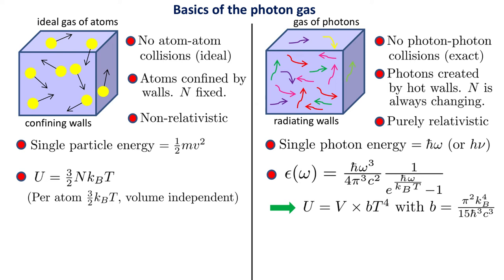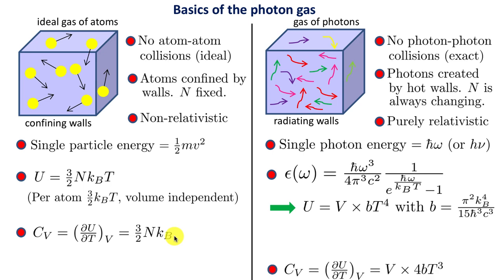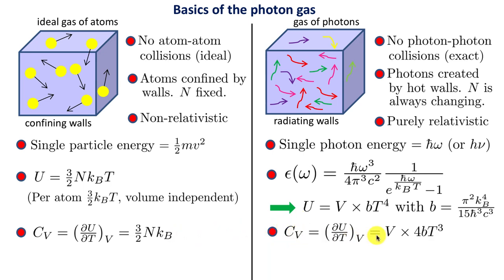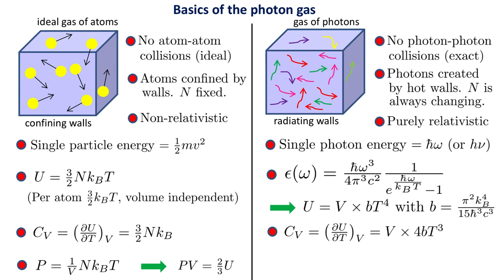For both gases we can compare specific heats at constant volume, C_V = dU/dT|_V. For the ideal gas, C_V = (3/2)Nk_B — a constant. For the photon gas, differentiating U = bVT⁴ gives C_V = 4bVT³, which is directly proportional to volume. A larger volume means more photons; as you add energy you create more photons inside the box.